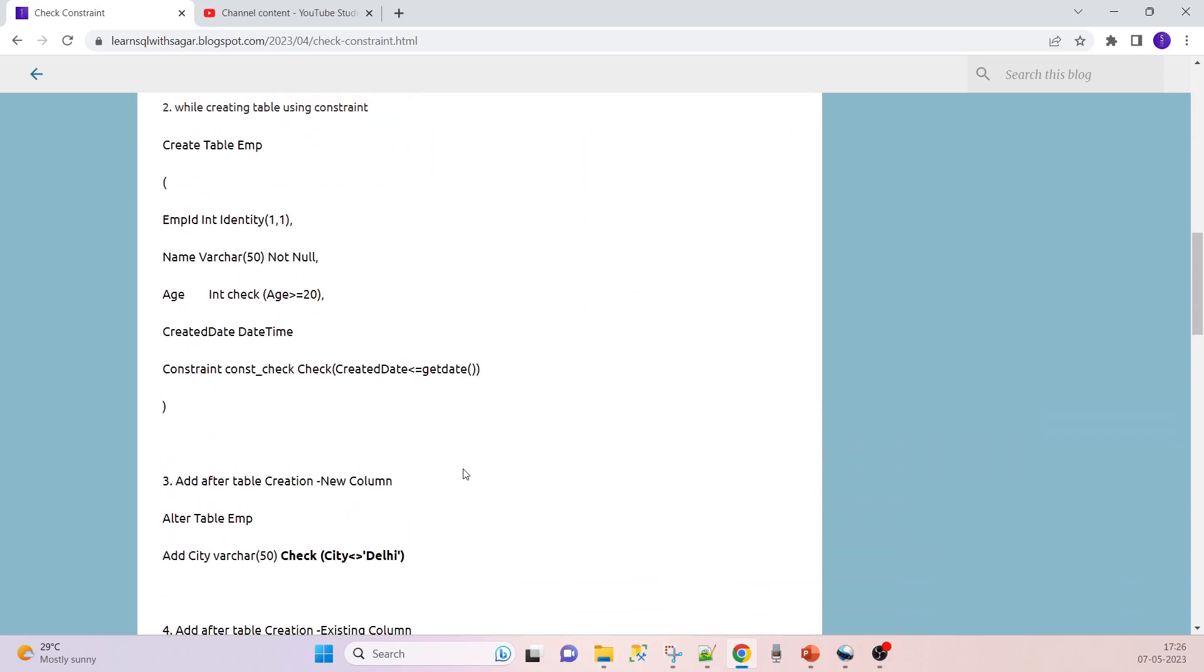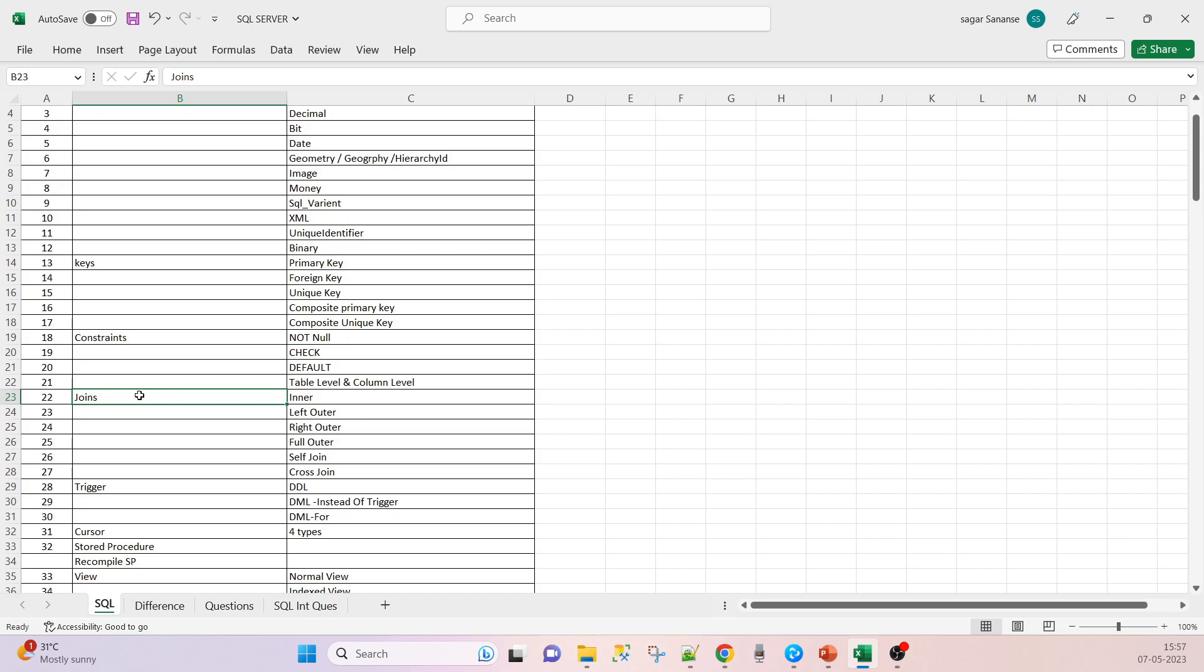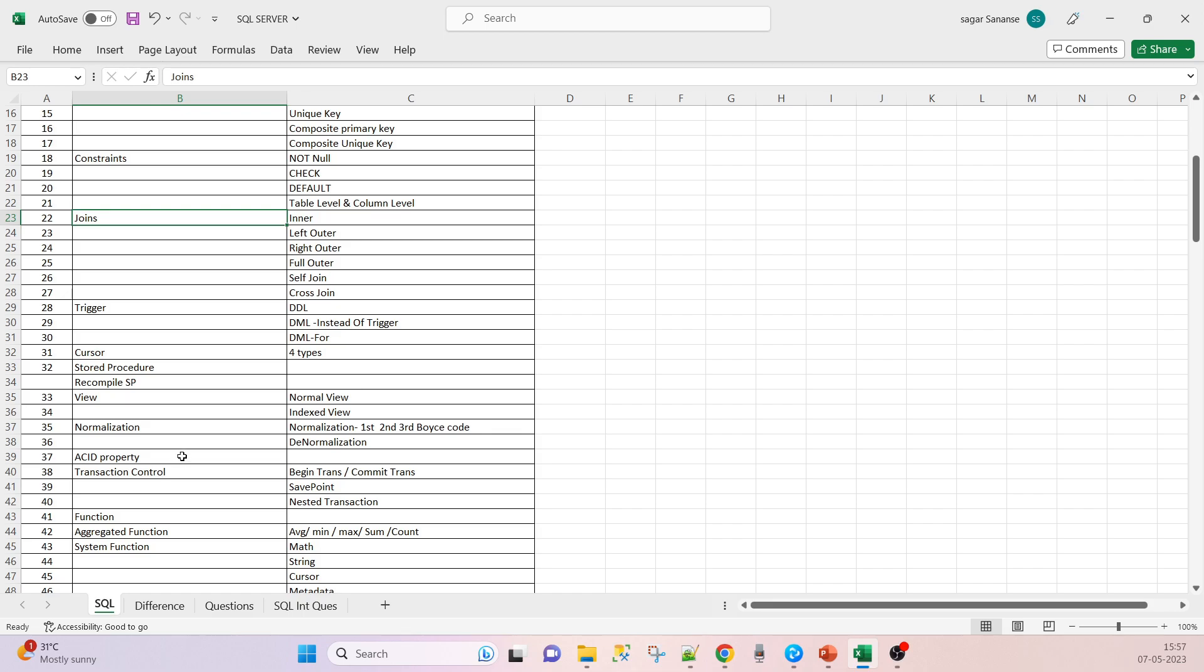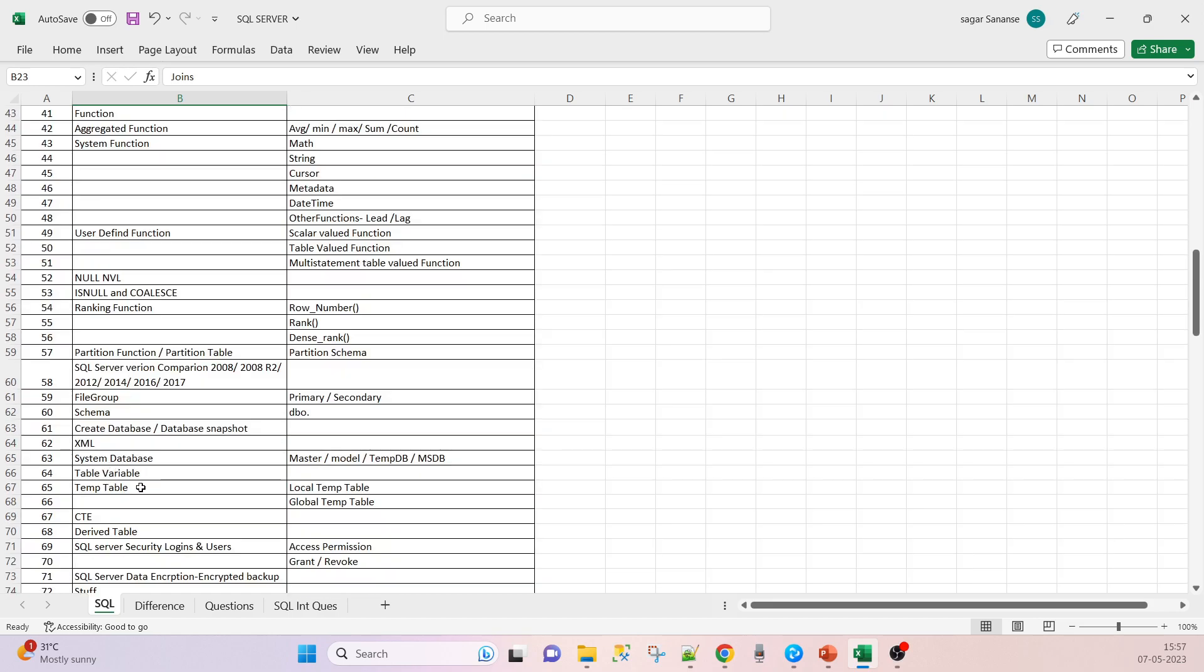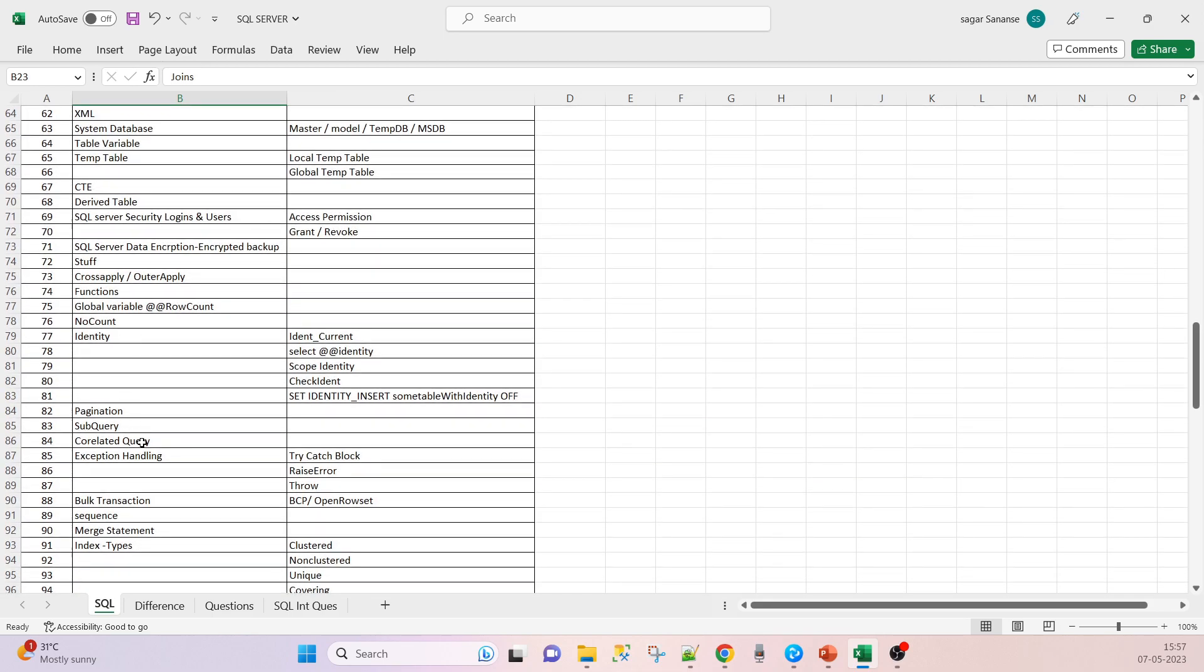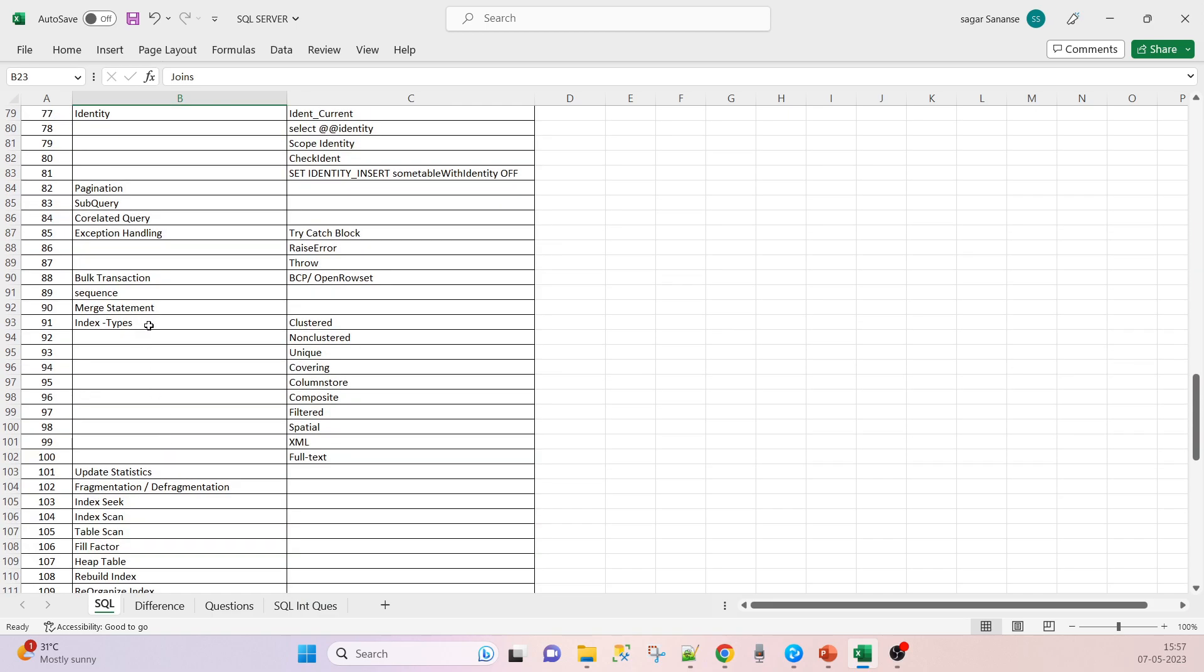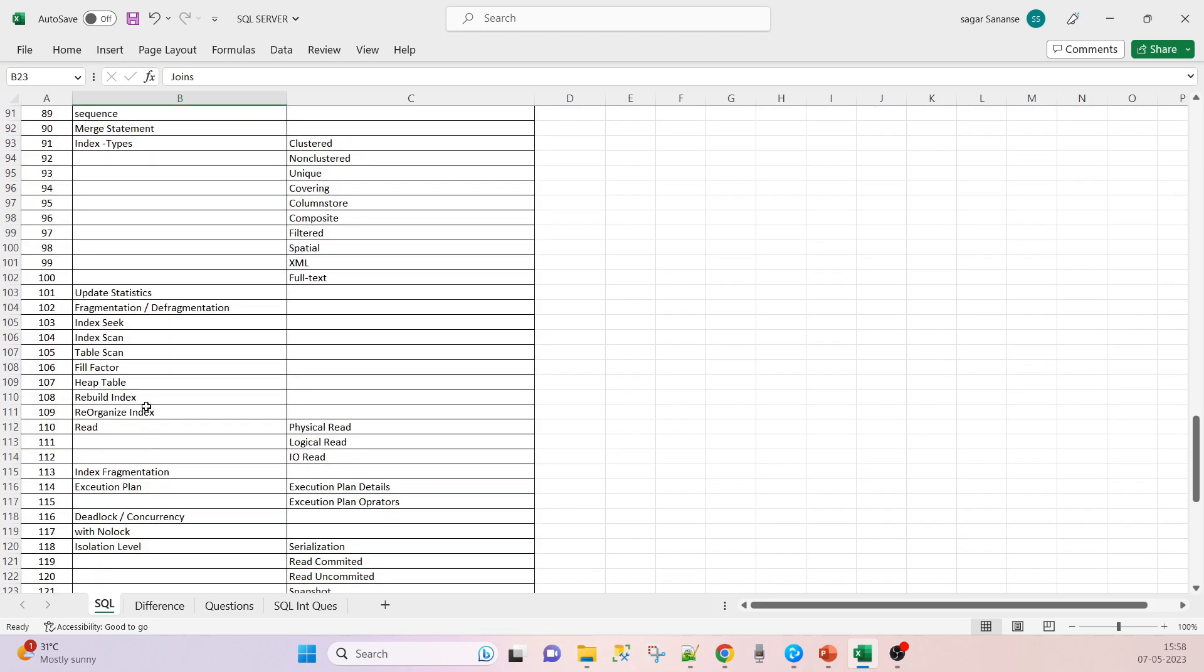Then joins, triggers, cursors, stored procedures, views, ACID properties, transaction control, functions, temp tables, table variables, CTEs, derived tables, identity, subqueries, correlated queries, sequences, different types of indexes, statistics, index seek, index scan, table scan, reorganize index, and rebuild index.